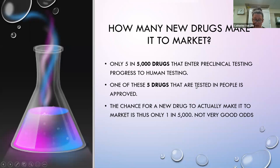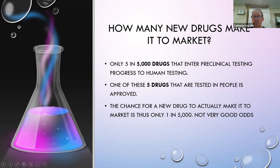How many new drugs make it to market? Only five in 5,000 drugs that enter pre-clinical testing — where we're using animals, not humans — actually progress to human testing in phase one. Of those five drugs tested in people, only one is eventually approved. So the chance of a new drug making it to market is about one in 5,000. Not very good odds.